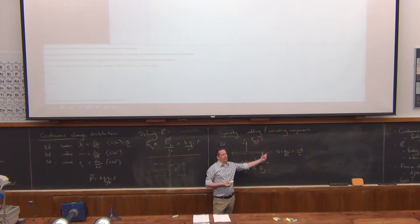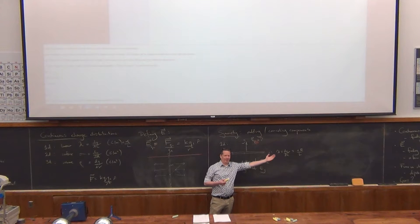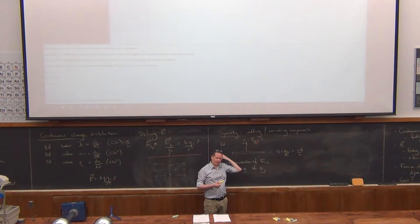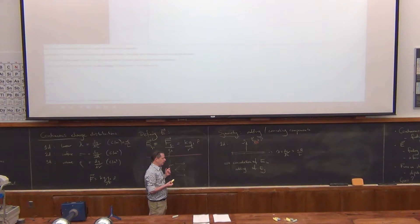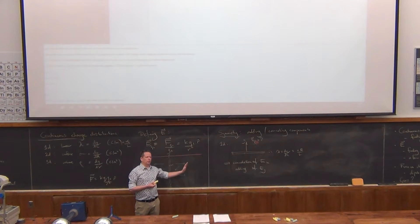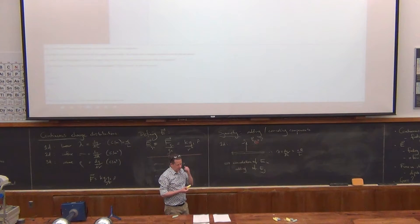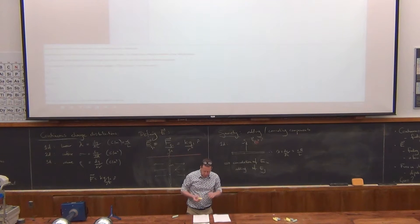If the rod is infinite, then any point works, because there's always an infinite amount on either side giving cancellation. That's why with an infinite two-dimensional sheet the field lines are always perpendicular. These ideas of symmetries and adding and canceling components are ones we're going to make quite good use of.